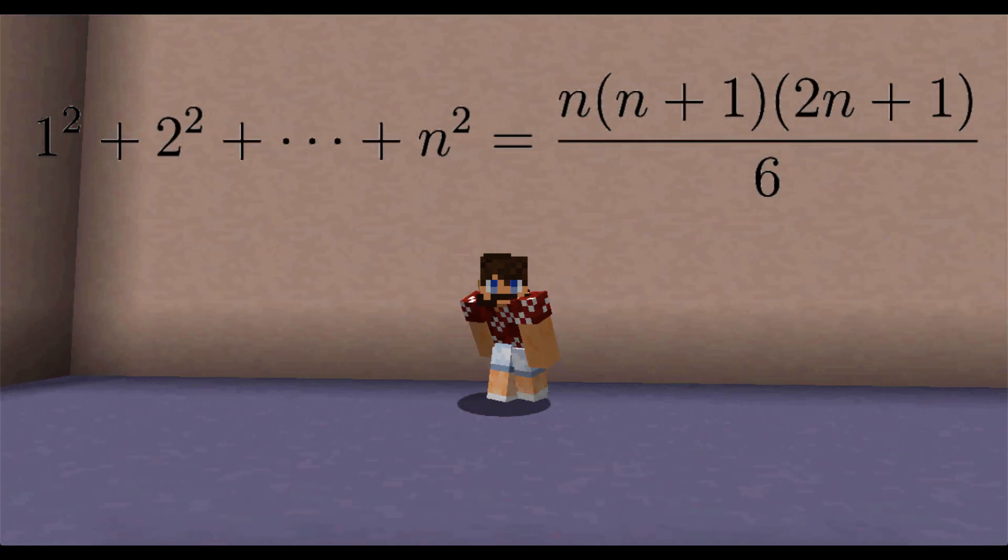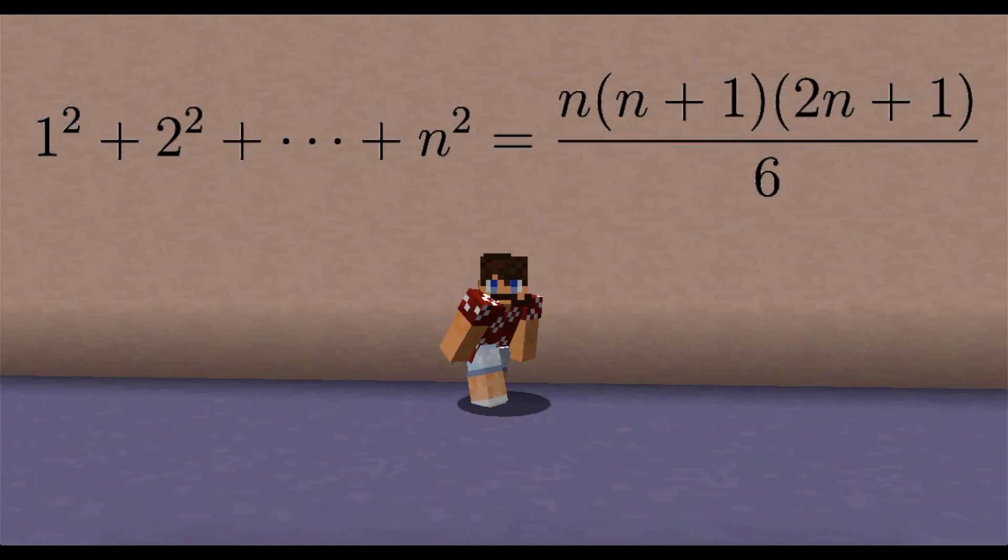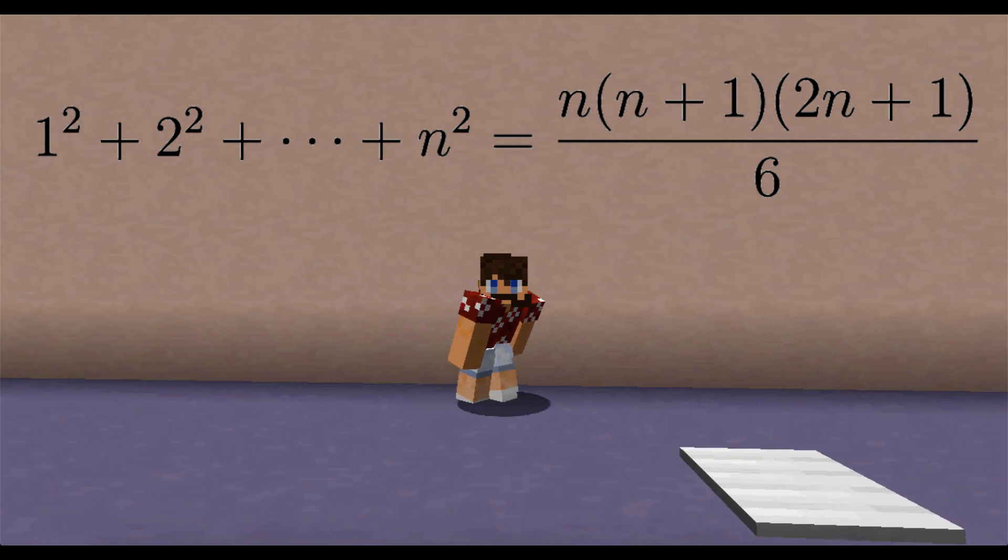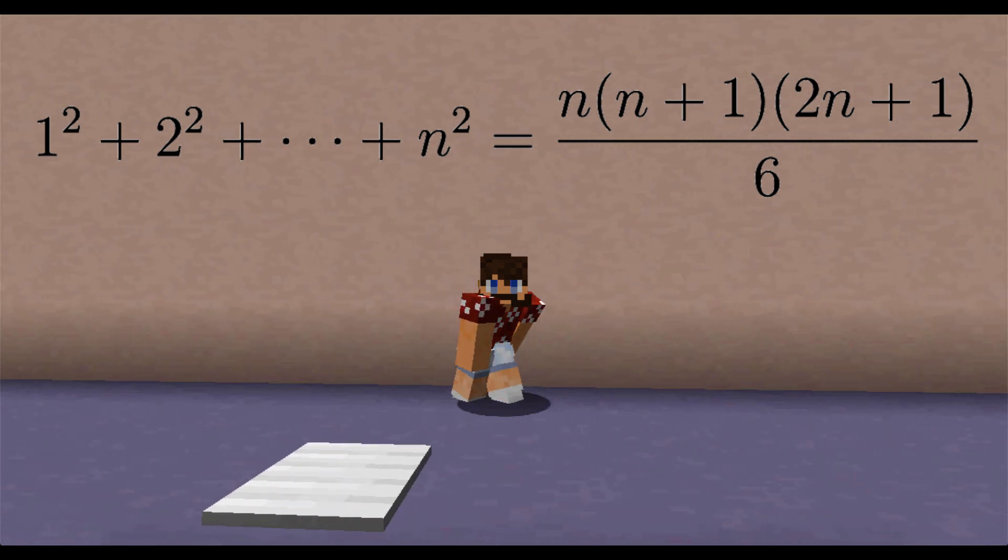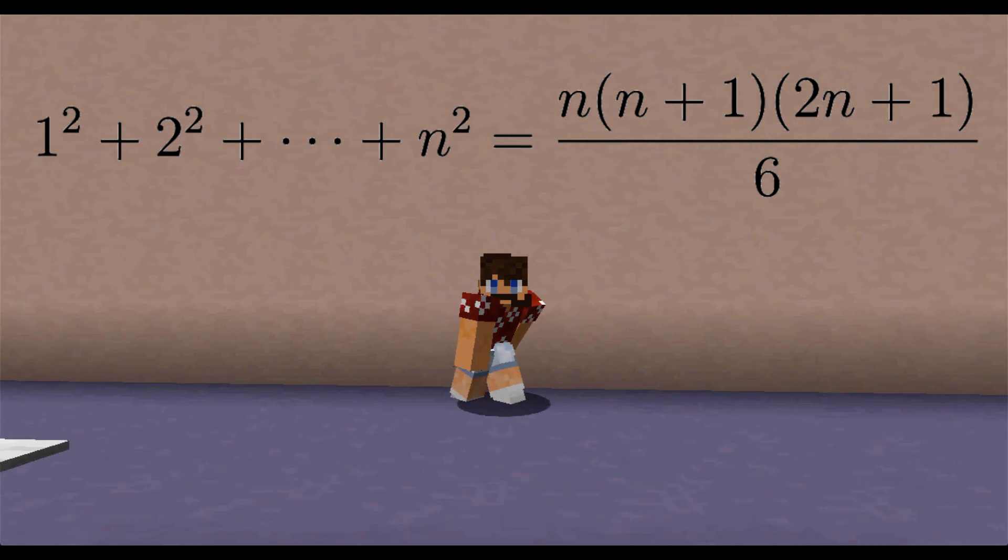In calculus class, you learn that 1 squared plus 2 squared plus all the way up to n squared is equal to n times n plus 1 times 2n plus 1 all over 6.